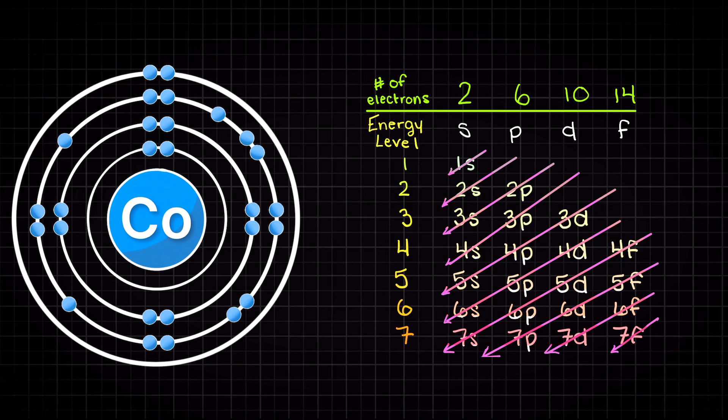So, since we have 27 electrons to place, let's use this Bohr model of cobalt to help us keep track of all of our electrons. Recall that with this Bohr model, each of these rings around our cobalt center denotes an energy level on our energy level diagram.